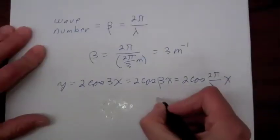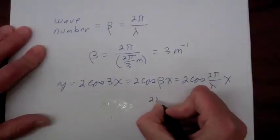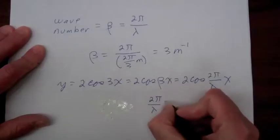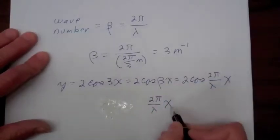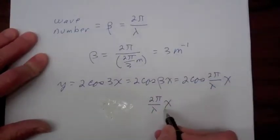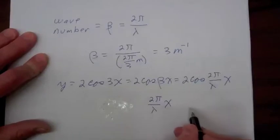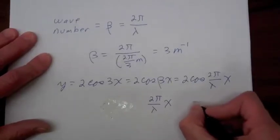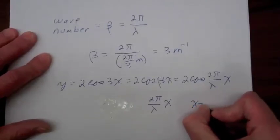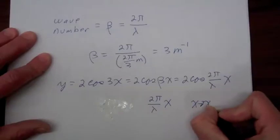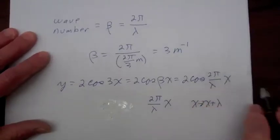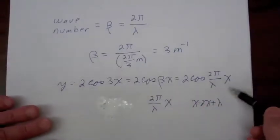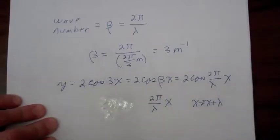Looking at the argument of our cosine function, we see that whenever x changes by the amount of one wavelength, the argument of the function will change by an amount of 2π.